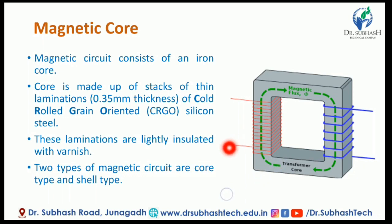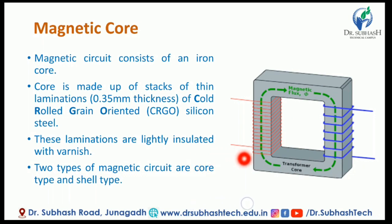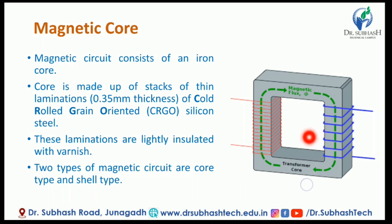We have two types of magnetic circuits: core type and shell type. This is the magnetic circuit — the core type and the shell type.